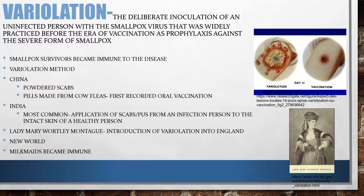In India, one of the most common forms of variolation was the application of scabs or pus from a smallpox patient to the intact or scarred skin of a healthy person. Children were exposed from people with very mild cases, while adults received stronger material. Children generally have weaker immune systems, whereas adults can fight off the disease more easily.